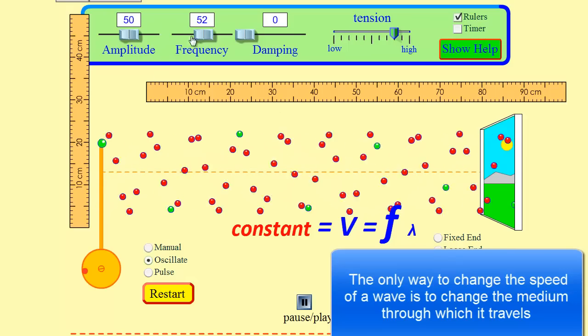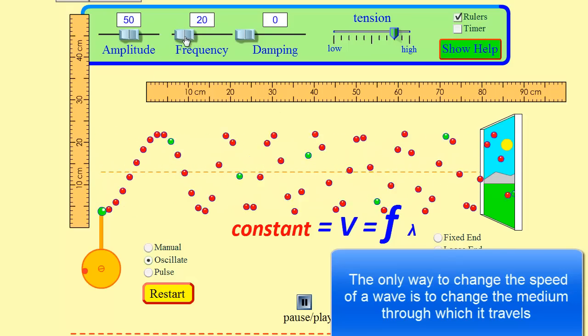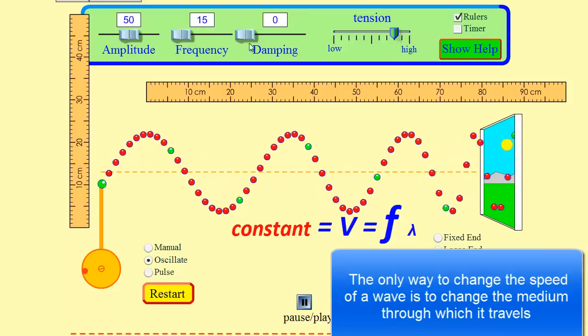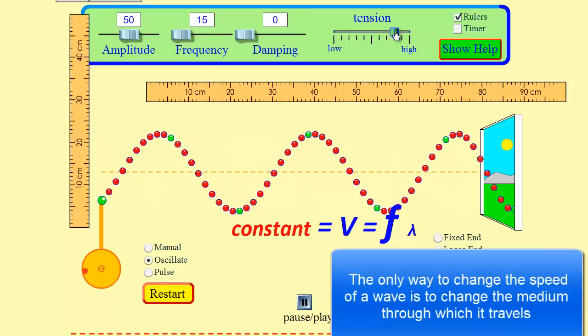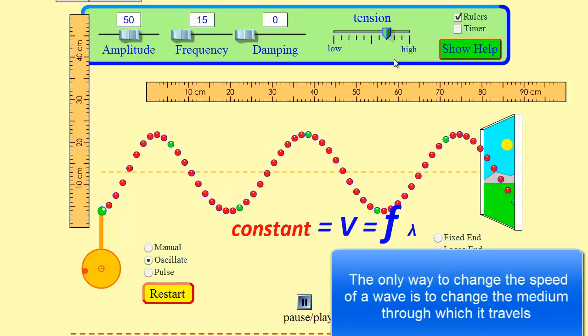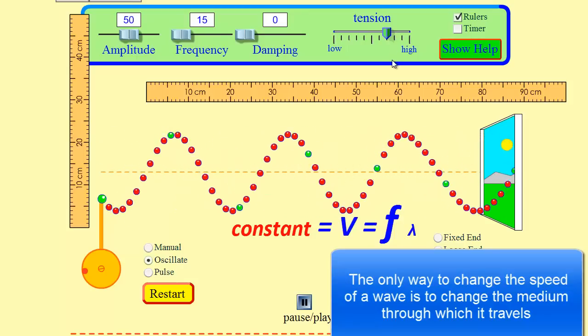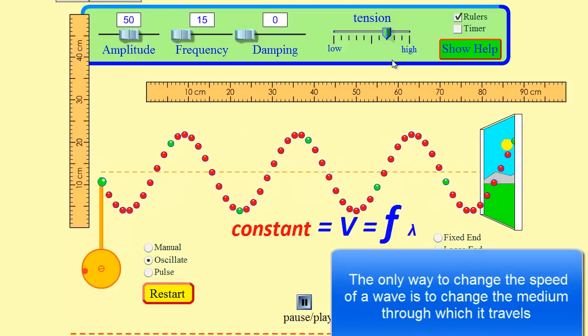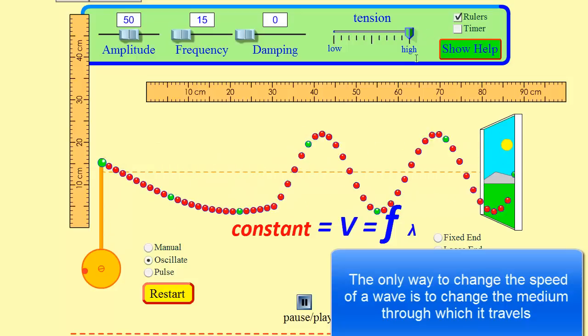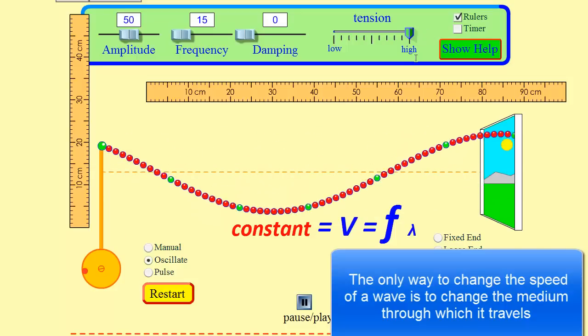Drop it down so we can actually see the wave here. So now it's moving quite slow. What happens if I drop it down even lower in tension? Right? It's even slower. And if I crank the tension up, we get back to our fast wave again.